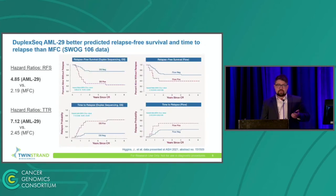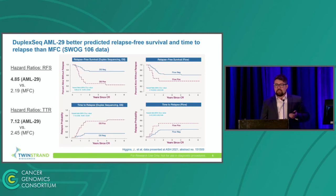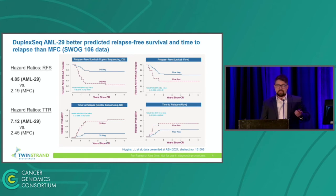That was a technical demonstration. Now let's look at some clinical data from the SWOG 106 study. We looked at 67 adult AML patients, day 28 bone marrow aspirates. Duplex sequencing data is on the left; flow cytometry is on the right. The bigger the gap between the lines, the better you did. Duplex sequencing significantly outperformed flow cytometry when it came to predicting time to relapse and overall relapse-free survival. So that's exciting if you're thinking about applying NGS for AML MRD — it's a good method.